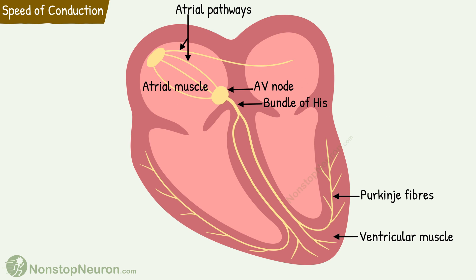Finally, let's see the velocity of impulse conduction in different parts of the conductive system. The speed of conduction in atrial muscle cells is about 0.3 meters per second. In atrial pathways, it's about 1 meter per second. Conduction in the AV node is very slow — the speed here is only 0.05 meters per second. In the bundle of His, the impulse travels at 1 meter per second.